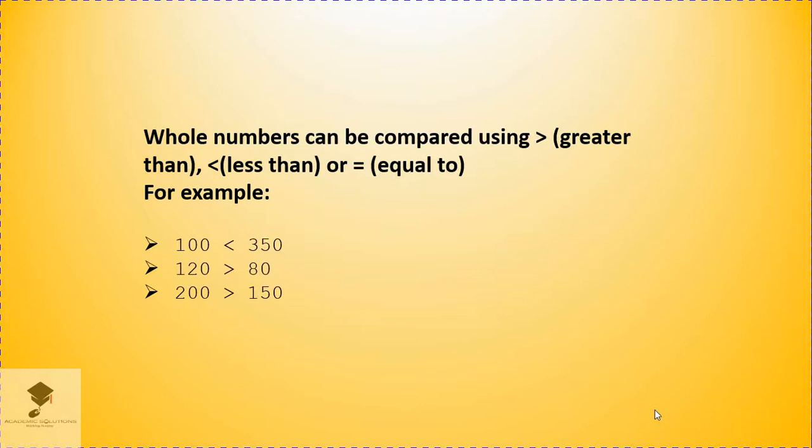So we are going to say 100 is less than 350. The second one will compare 120 and 80. But then we know that 120 is greater than 80. Therefore, we are going to use the symbol greater than. The same applies on the third one, which is 200 and 150. We know that 200 is greater than 150. Therefore, we are going to use the greater than symbol.